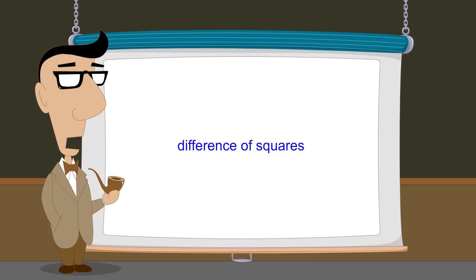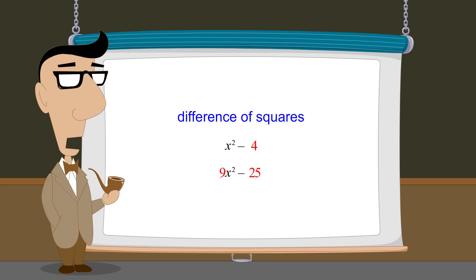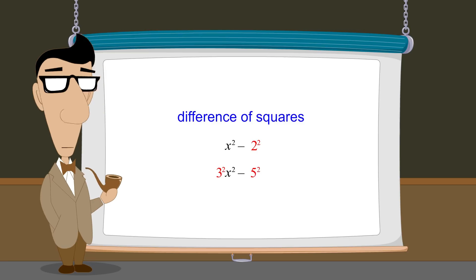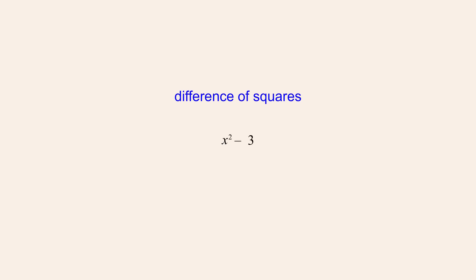So far we have seen two examples of quadratic expressions that are the difference of squares, and in both examples all the constants were perfect squares — that is, squares of integers. However, the constants in difference of squares expressions don't have to be perfect squares or even integers. For example, the quadratic expression x-squared minus 3 is a difference of squares even though 3 is not a perfect square. It is the difference of x-squared and the square root of 3 squared.